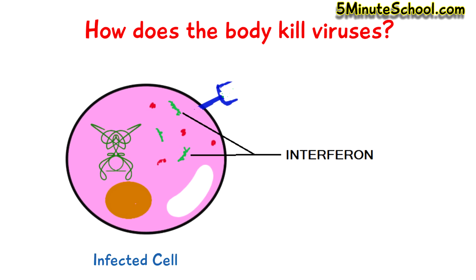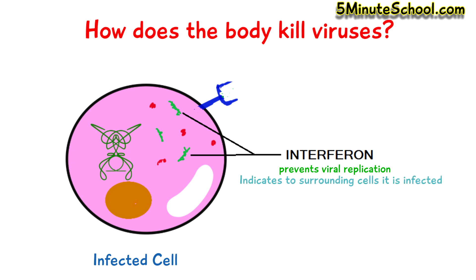Interferons are another way the body can protect itself from viruses. When a virus has infected a cell, the cell starts producing very small proteins called interferons, which can directly affect the ability of the virus to replicate. At the same time, they signal to neighboring cells that they are infected, causing surrounding cells to increase the amount of MHC class 1 receptors on their surface, so T cells can identify which cells are infected.